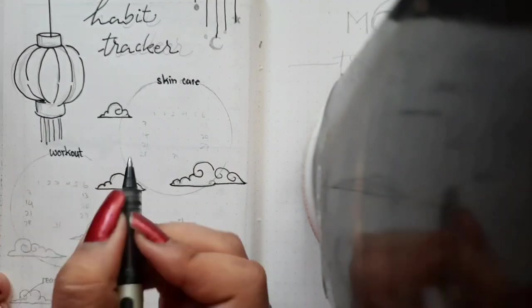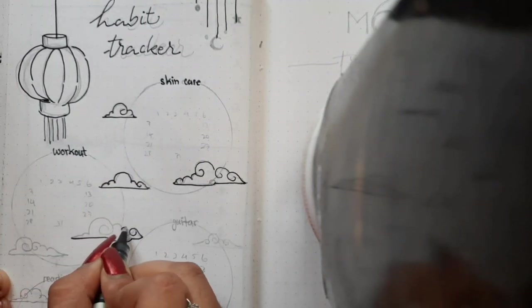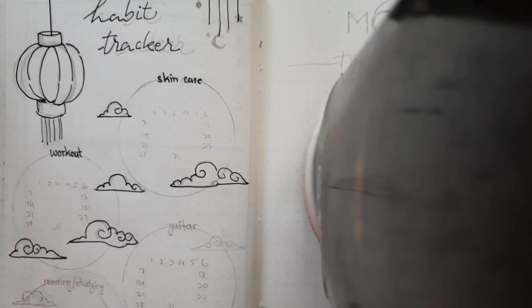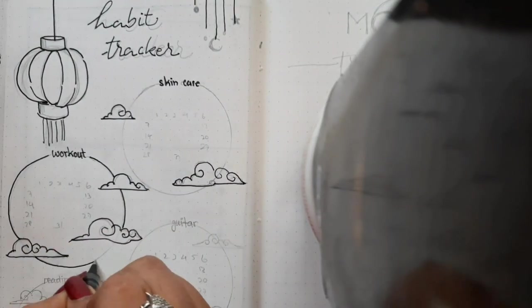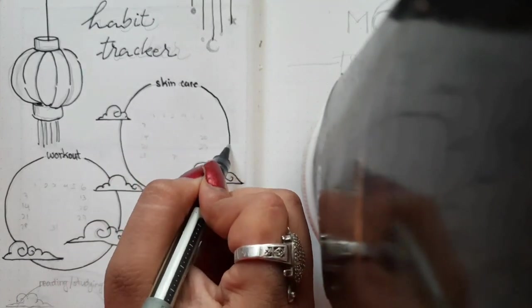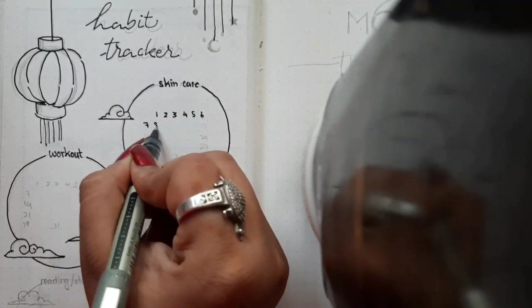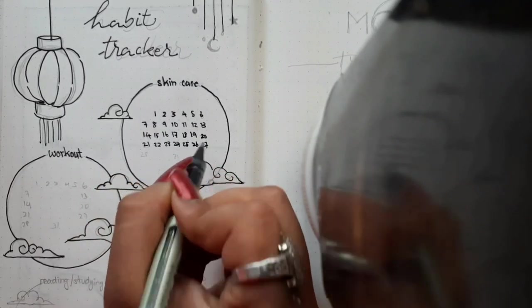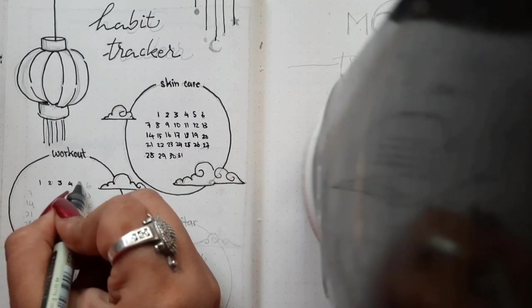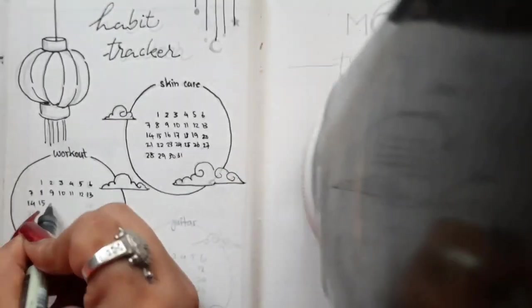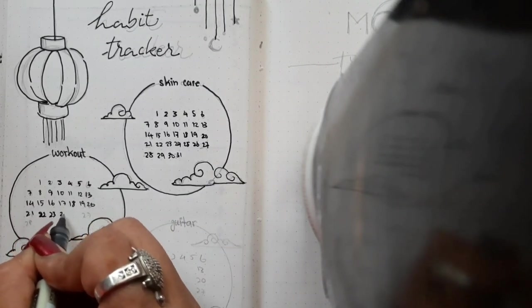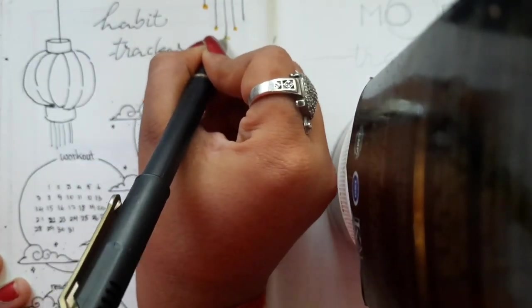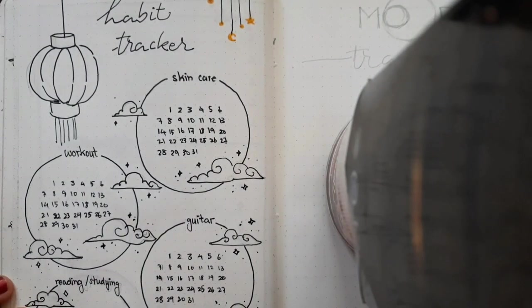I'm gonna track down my skincare routine, and then workout, and then guitar practicing, and at last reading or study sessions. This includes both academic and non-academic reading to me. We're gonna draw four circles indicating four habits, and on the top of the circle we're gonna write down the habit which you're gonna track. Then we'll be illustrating small fluffy clouds around the circle so the page doesn't look very simple nor very dramatic. The page is pretty minimal and aesthetic and cute. And then at the center we're gonna write down the numericals, the days of the month.